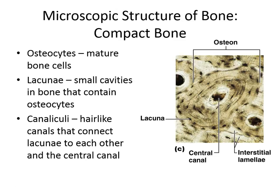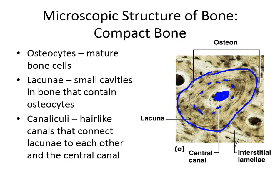Looking at a single osteon in more depth: the extracellular matrix background is the lamella, the whole tree trunk functional unit is the osteon, with the central canal in the center housing blood vessels. Around the outside you've got dark holes called lacunae — that's the structure — and the cells inside are called osteocytes. When they were on the periosteum still building bone they were called osteoblasts, but then they got trapped and now just maintain the matrix. You also have hair-like structures called canaliculi coming out of each lacuna — these little canals lead from the central canal outward to make sure the osteon gets the blood it needs.